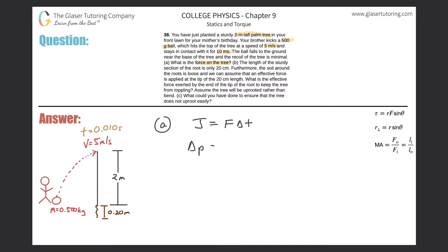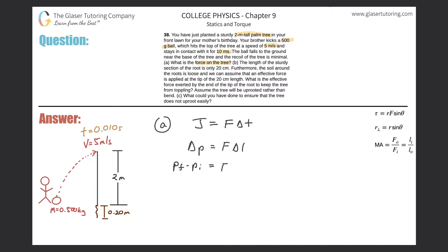Recall that impulse is simply another term for change in momentum. So I can write: change in momentum equals the force applied multiplied by the time over which this force is applied. I'm looking for the force on the tree. The force applied to the tree comes directly from the force that the ball inputs to the tree. Since I'm assuming the ball has no momentum after the collision, all of the momentum the ball had gets transmitted to the tree.